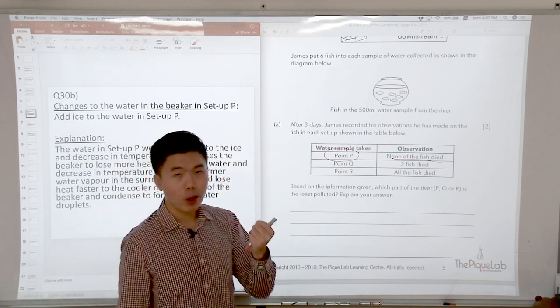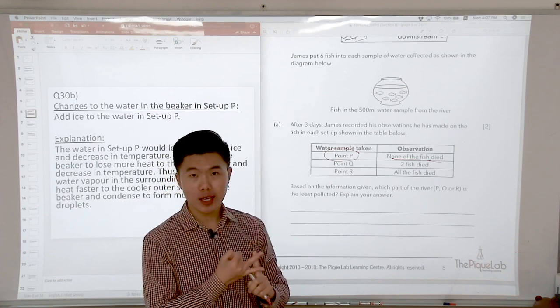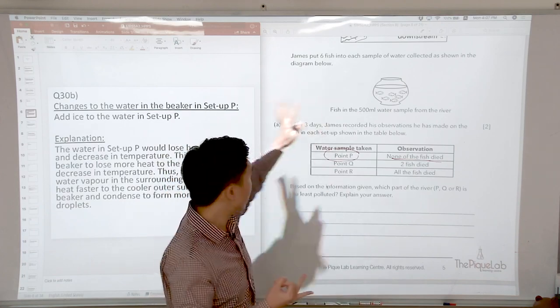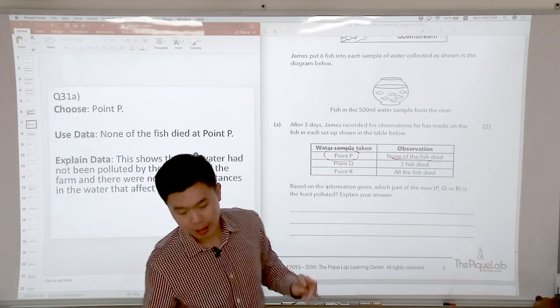So following our CUE method of writing, C stands for choose, U stands for use the data, which is the evidence in the question, and E is the explanation. This is how we would phrase our answer.